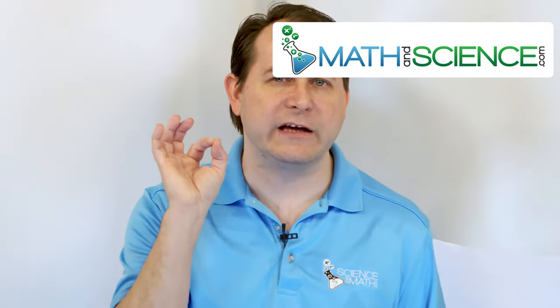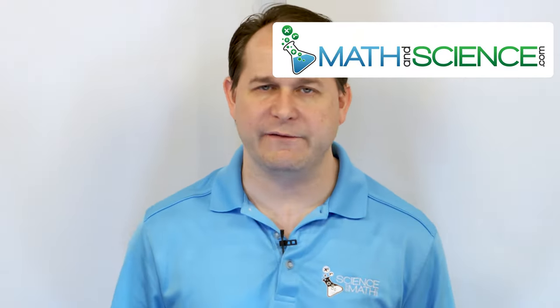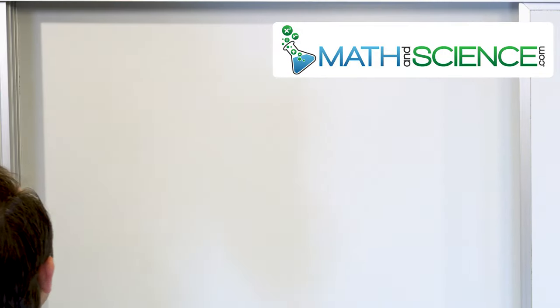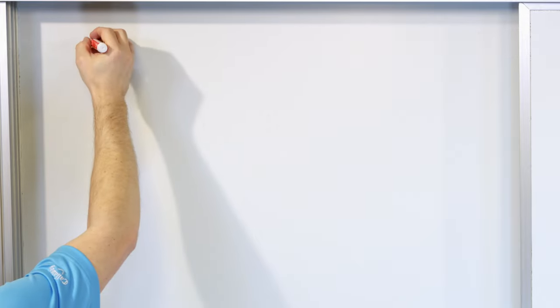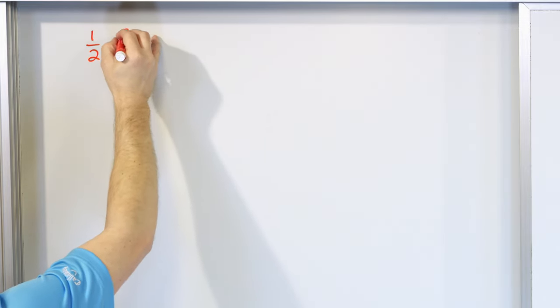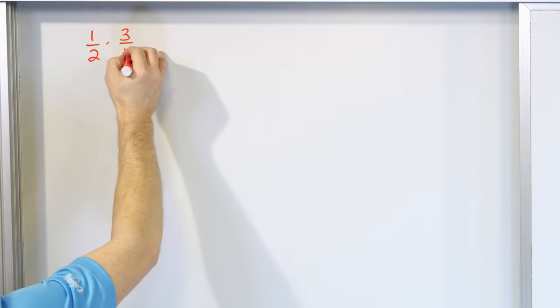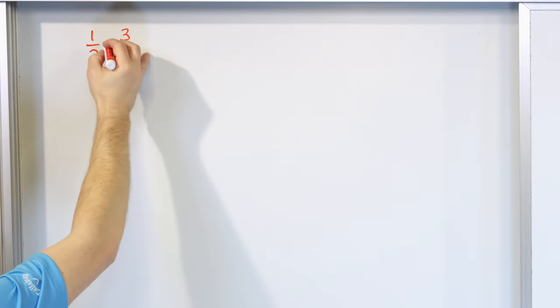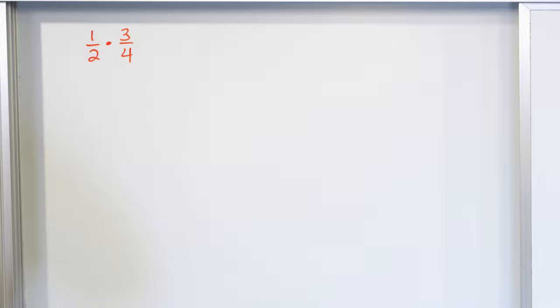If you can remember how to deal with regular fractions, then this stuff will be very simple. So to get you on the right path, I'm going to do a quick mini review here. How do you do something like 1/2 multiplied by 3/4? When we multiply fractions, we do not need to find any kind of common denominator. That's for adding and subtracting fractions.